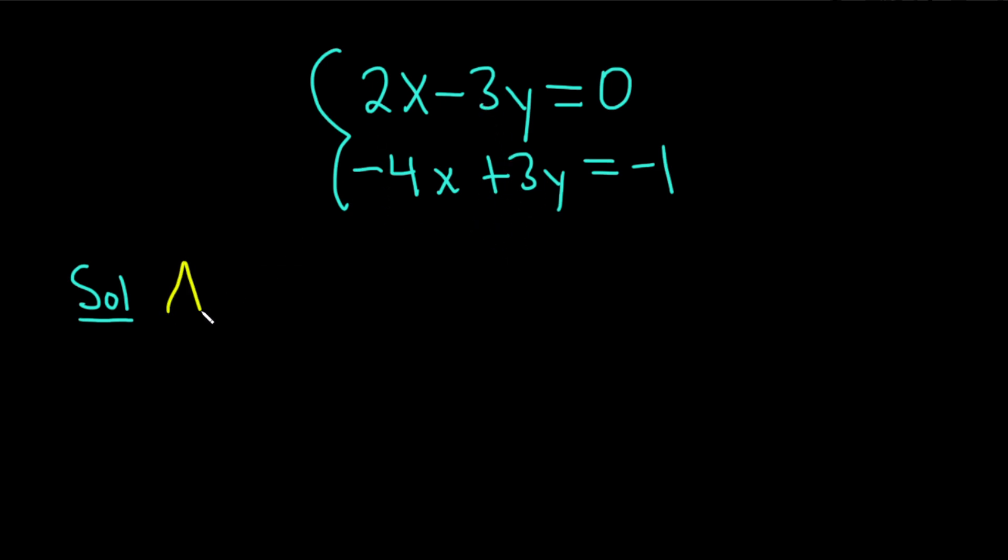So if we add, let's see what we get. 2x plus negative 4x is going to give us negative 2x. Negative 3y plus 3y is 0, and 0 plus negative 1 is negative 1.